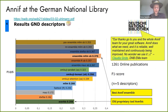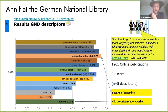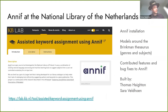ANIF is also being deployed in some German libraries. ZBW, the Leibniz Information Center for Economics, has been an early adopter. The German National Library has done extensive tests using both DDC classification and subject indexing with GND, with the idea of replacing their existing system with ANIF, and they have recently switched to using ANIF for subject indexing. The National Library of the Netherlands also has their own installation, building models around the Brinkman thesaurus, and has built a tool to support cataloging workflows with the help of ANIF.